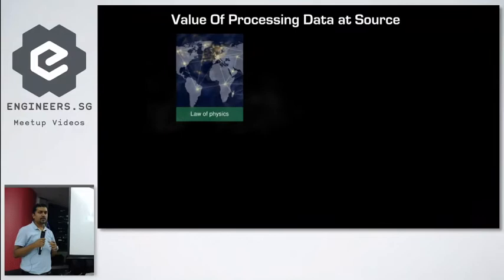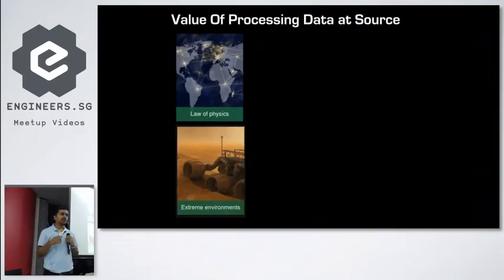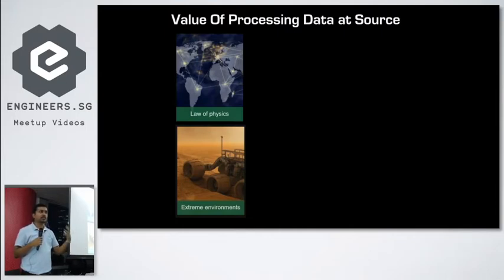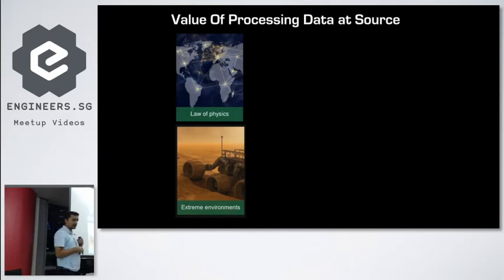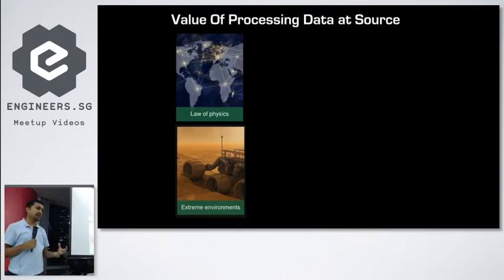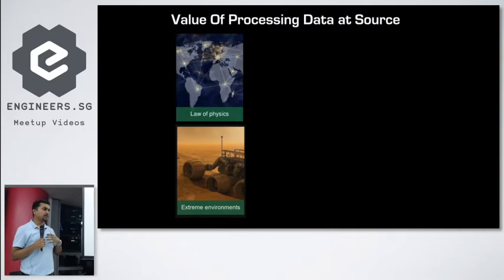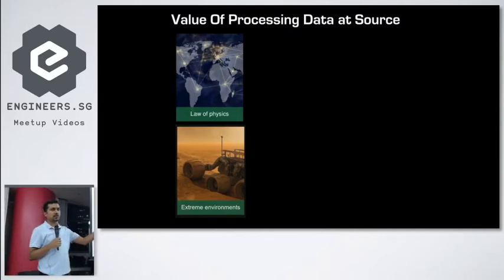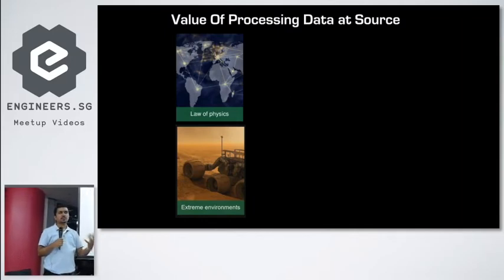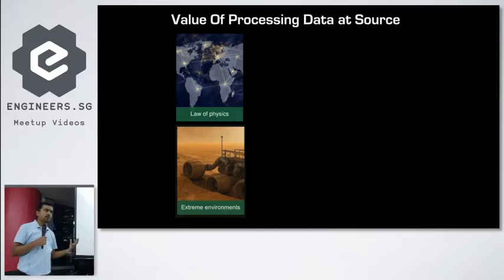That cloud-centric approach is not very useful in most critical situations. What we need to do is process the data where it is generated. The first reason for this is the laws of physics — anything that travels takes time. To reduce the latency from sending data from the source to the cloud, you need something that can process the data right at the source.